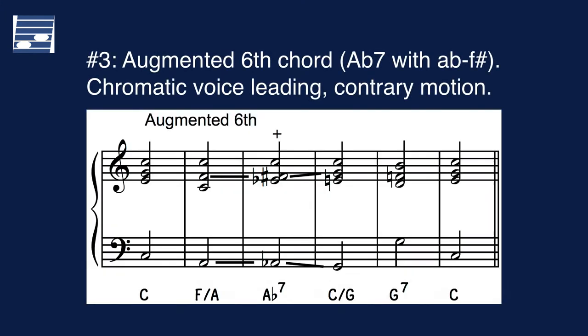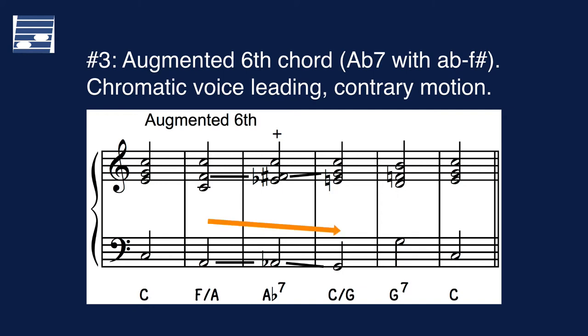The origin of the augmented 6th chord may be explained from a voice leading point of view as shown here. Starting from the first inversion F major chord, we apply chromatic contrary opening motion, with the bass part descending as A, A-flat to G, while the middle voice rises as F, F-sharp to G, into the second inversion tonic chord. It is the interval A-flat to F-sharp which is the augmented 6th, giving the chord its name. Rewriting the F-sharp as G-flat leads to the dominant chord label A-flat 7.